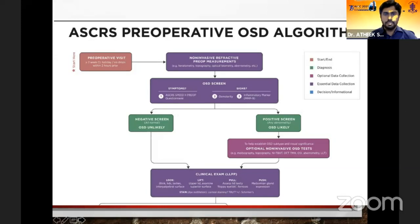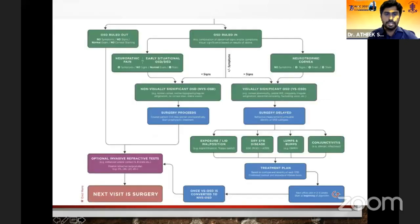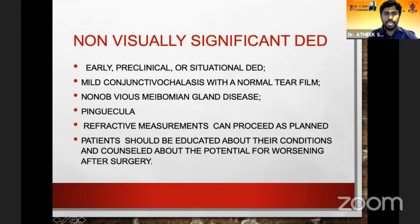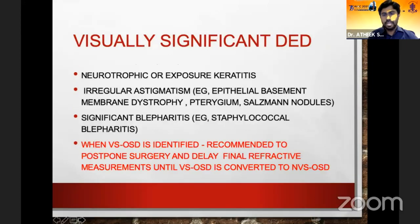The ACRS algorithm published in 2019 gives us an easy way to resolve this confusion. It uses a questionnaire followed by a series of examinations and evaluations where you can diagnose ocular surface disease as visually significant or visually non-significant dry eye disorder.